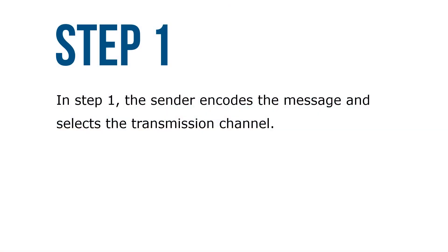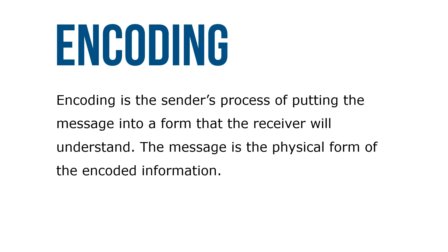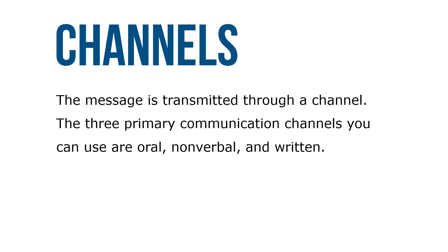In step one, the sender encodes the message and selects the transmission channel. The sender of the message is the person who initiates the communication. Encoding is the sender's process of putting the message into a form that the receiver will understand. The message is the physical form of the encoded information and is transmitted through a channel. The three primary communication channels are oral, nonverbal, and written.